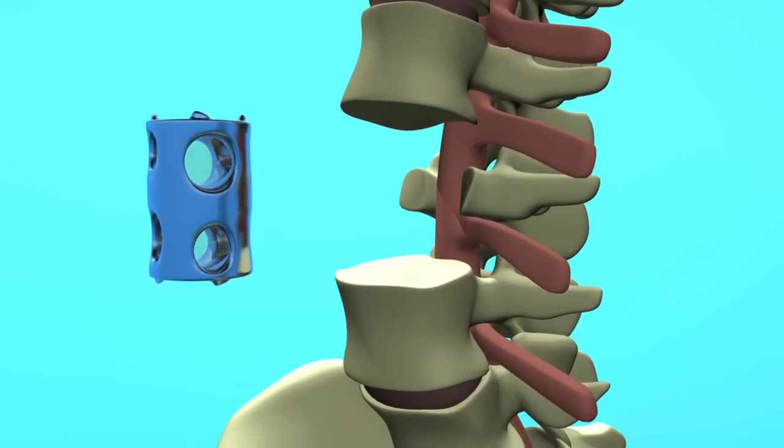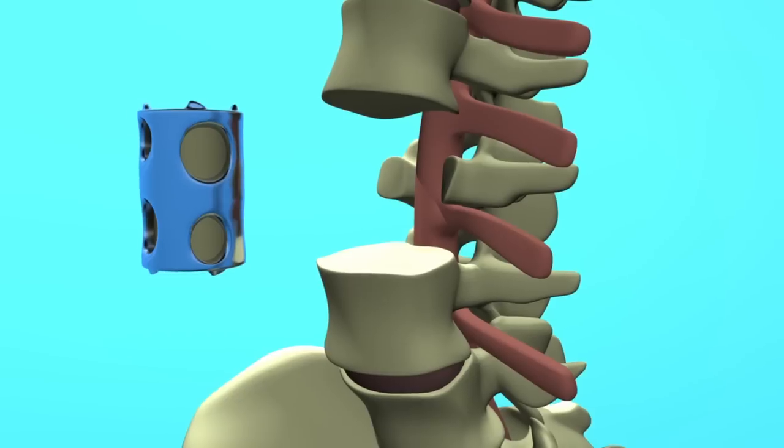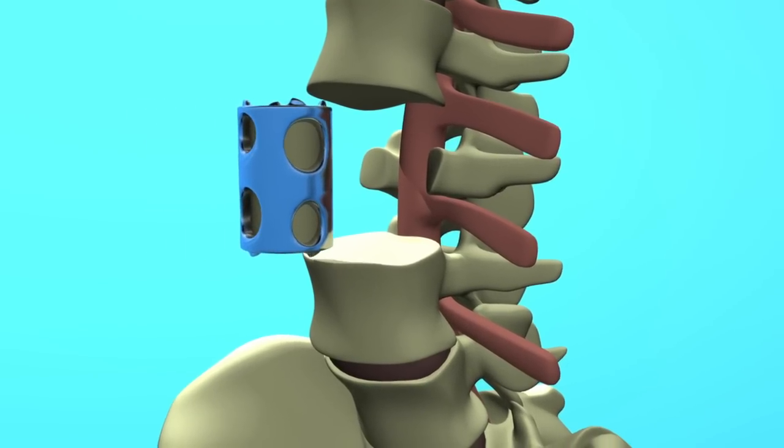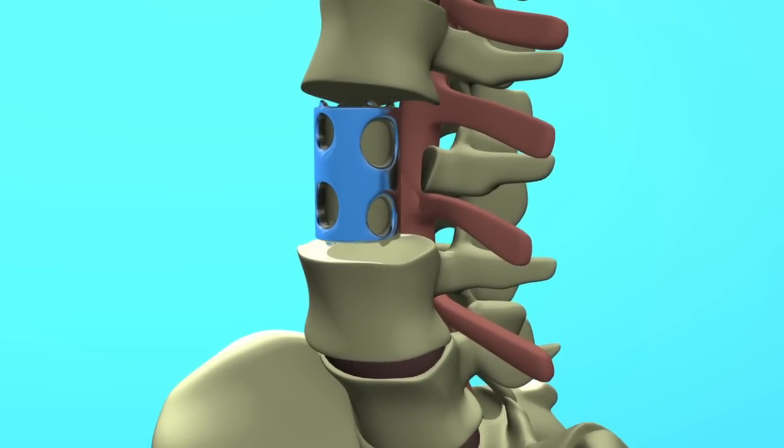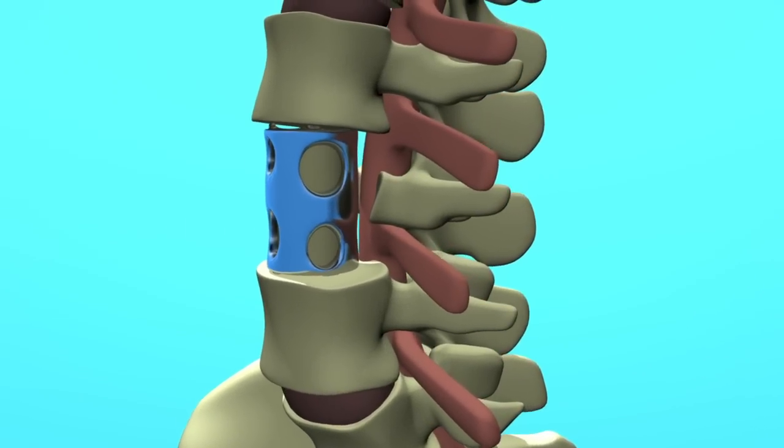Bone graft material is then inserted into the vertebral body replacement, or the VBR. The VBR is then fitted in between the two remaining healthy vertebrae.